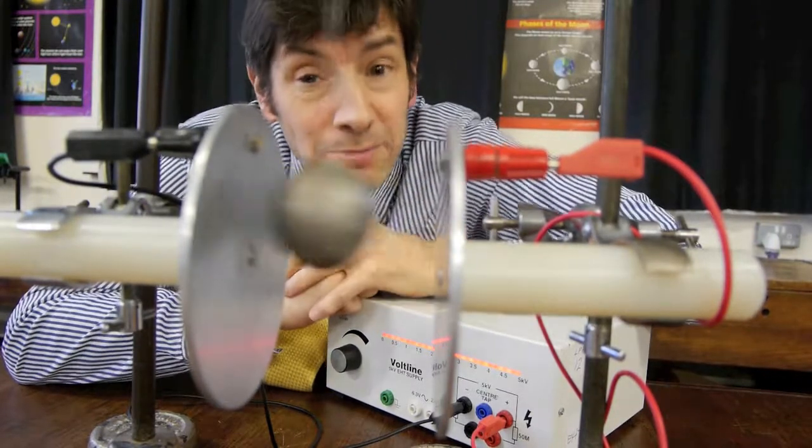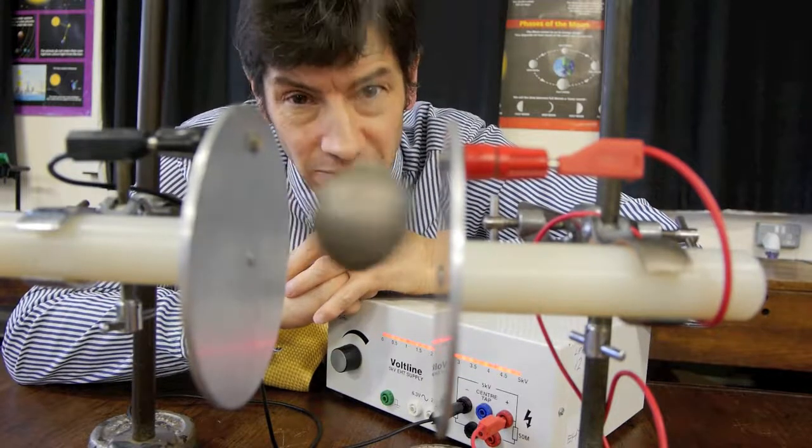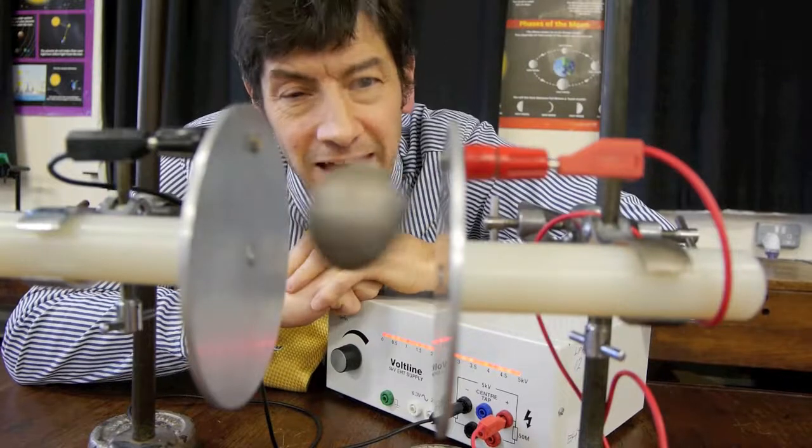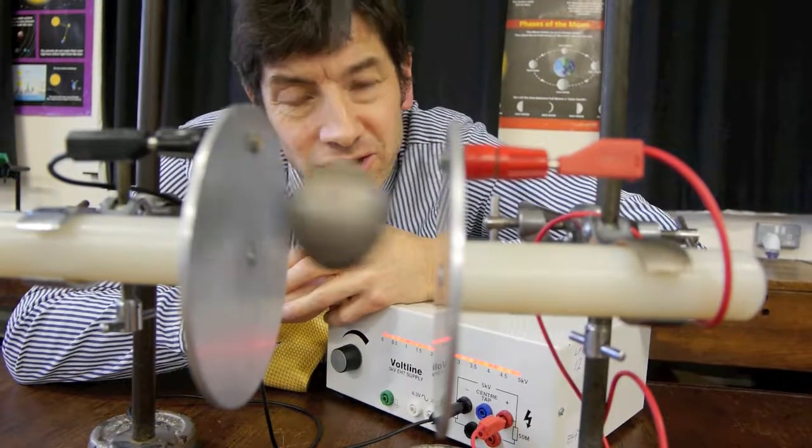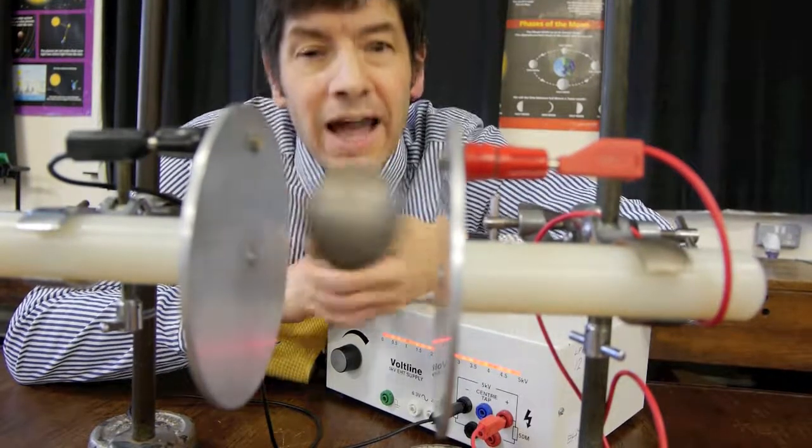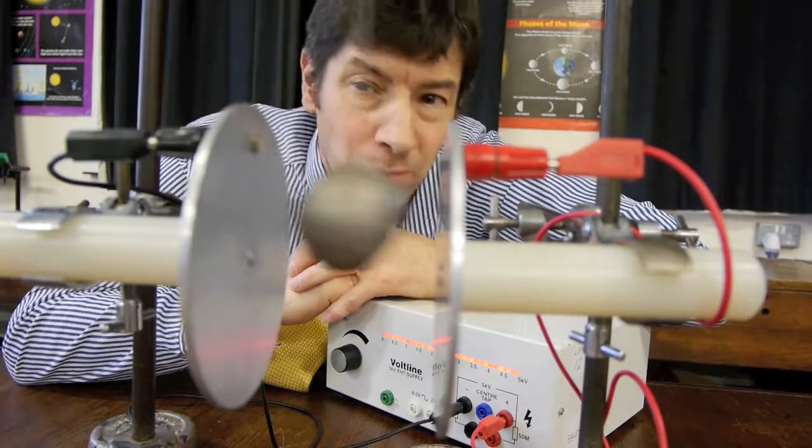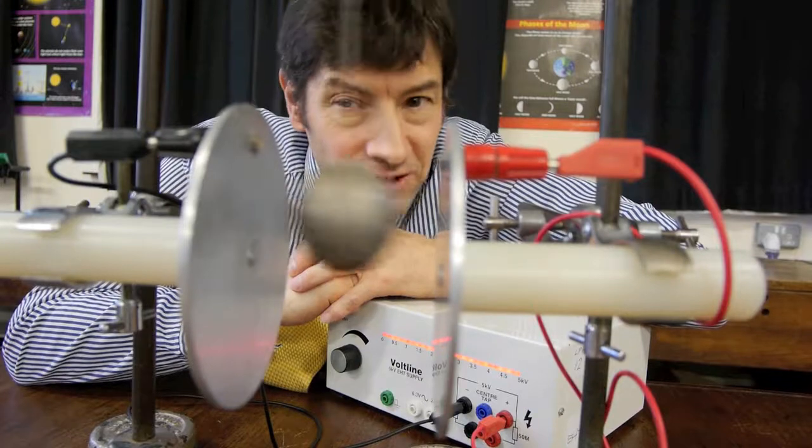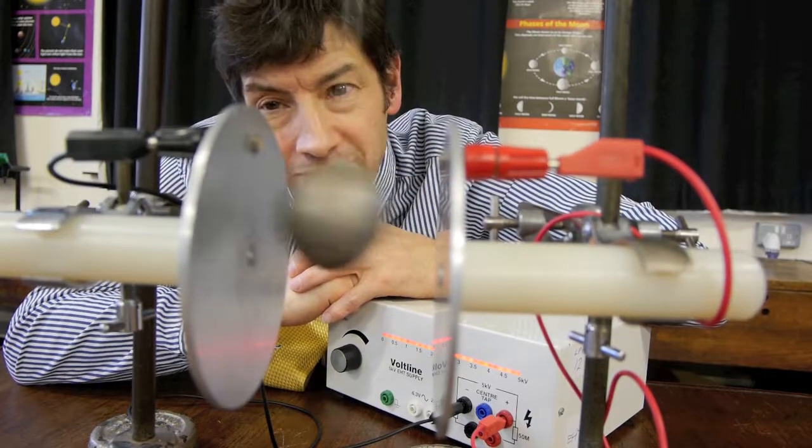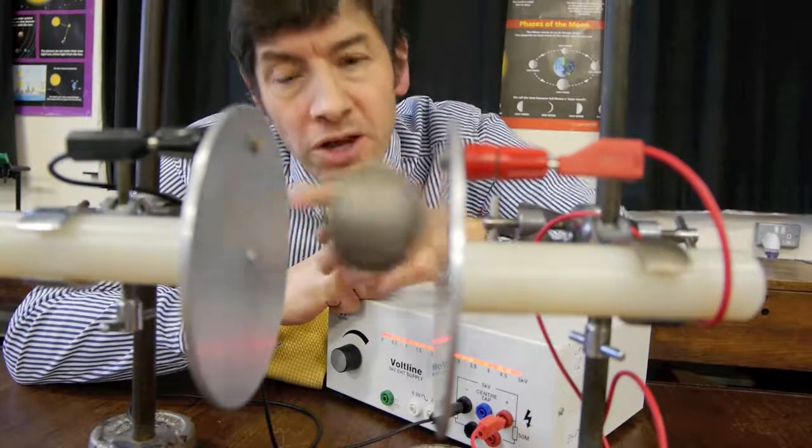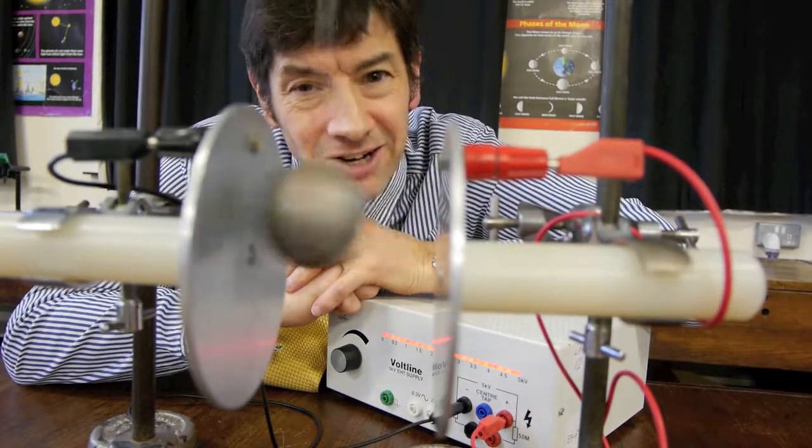Rather like gravity pulling on masses, electric fields apply forces to charges. The electric field in this gap makes the electrons in the ball feel a force and therefore pulls the ball across. The opposite happens, of course, when the ball becomes positively charged. The electric field pulls it the other way. The electric field itself always runs from plus to minus, but the ball can go either way because it's swapping its charge.